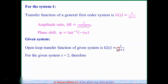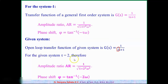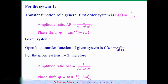Substituting tau = 2 into the formulas, the AR value for System 1 becomes 1 / √(1 + 4ω²) and the phase shift phi₁ = tan⁻¹(−2ω). Only the tau value changes; all other aspects of the formula remain the same. This gives us AR and phi values for System 1.